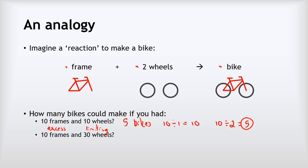What if we had ten frames and thirty wheels? You'd probably realise we can now make ten bikes. For the frames: ten divided by one gives ten. For the wheels: thirty divided by two gives fifteen. We've got enough wheels to make fifteen bikes but only enough frames to make ten, so ten bikes is all we can make. In this case, the frames are the limiting reactant and the wheels are present in excess.